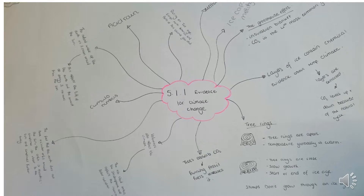You need to have an understanding about evidence for the various aspects of climate change that might crop up in the exam — for example, tree rings. When you cut through a tree stump, tree rings show an annual record of tree growth. If the rings are very close together, it means it was particularly cold because the tree didn't grow very fast.